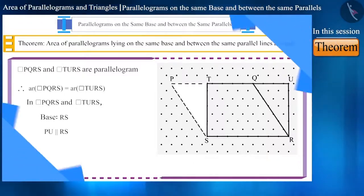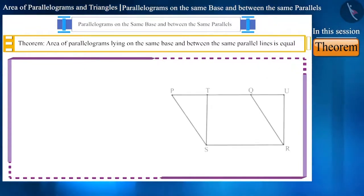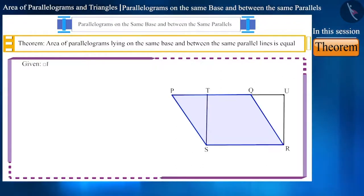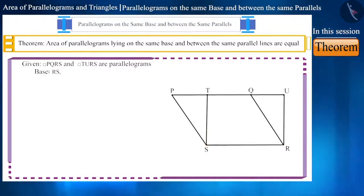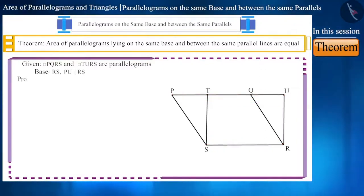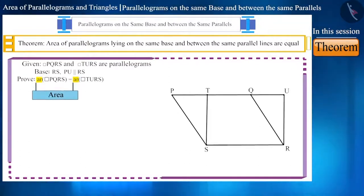Let us see the mathematical proof for this. Let us consider the quadrilaterals we used in the activity. We have two parallelograms — quadrilateral PQRS and quadrilateral TURS — lying on the same base RS and between the same parallel lines PU and RS. We have to prove that their areas are equal. Here, AR represents the area.